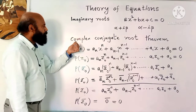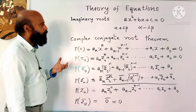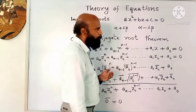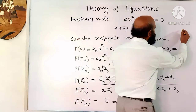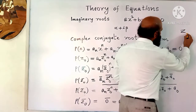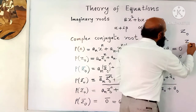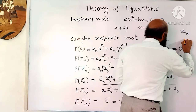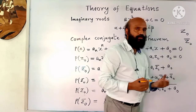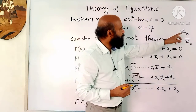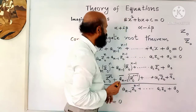Now let us see the complex conjugate root theorem. For a polynomial equation with real coefficients, if z0 is a root, its conjugate z0-bar will also be a solution. So z0 is a solution, then its conjugate is also a solution.